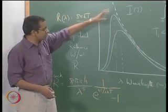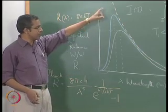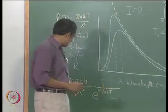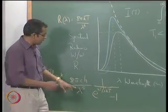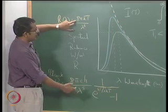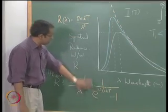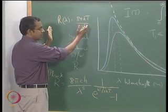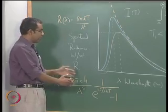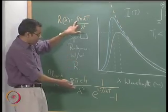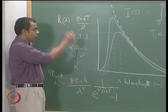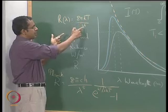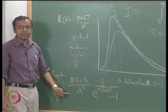This is the general idea he put together. He had no idea what the value of h would be — he simply assumed it as an attempt to curve-fit the data. He came out with this expression for R(λ,T), and by comparing this expression with the Rayleigh-Jeans expression, we can see that when lambda is high, the Planck expression reduces to the Rayleigh-Jeans expression. So the Rayleigh-Jeans law is correct at higher wavelengths, and Planck's law reduces to it at higher wavelengths.